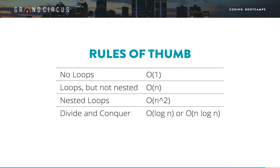Let's summarize these rules of thumb. First, if code has no loops, then it is unaffected by the amount of data — it's order 1. Second, if code has loops but no loops inside one another, that's probably order N; this includes having several loops one after another, but not nested. Third, if you have a loop inside another loop, and both are looping through your data, that's probably N squared. Finally, when you have a divide and conquer algorithm, you are probably looking at log N or N times log N — mathematically, the log function corresponds with the idea of repeatedly dividing a problem in two.